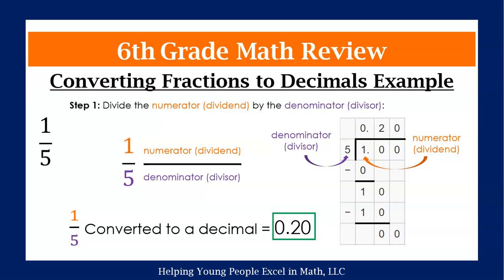For our first step, we are going to divide our numerator. If you notice, we have it highlighted in orange. The one is going to be inside the house. And five, our denominator, which is our divisor, is outside of the house. They are knocking on the door because they want to come inside.